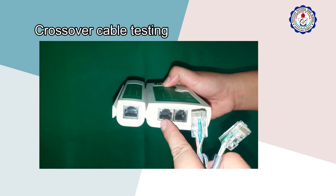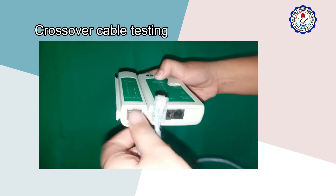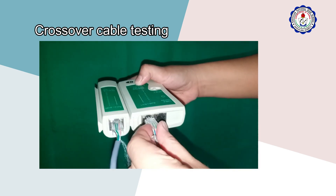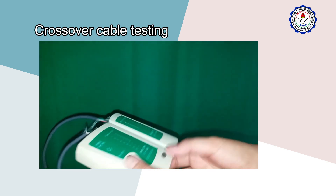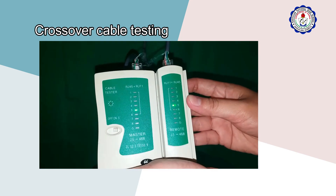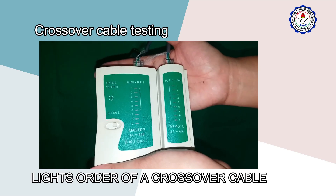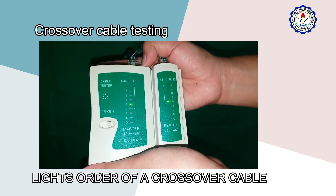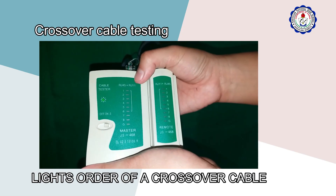Now let us test the crossover cable using the same procedures. Plug one end of the cable into the transmitter jack and the other into the receiver jack. For a crossover Ethernet cable, the lights on either end flash out of order.